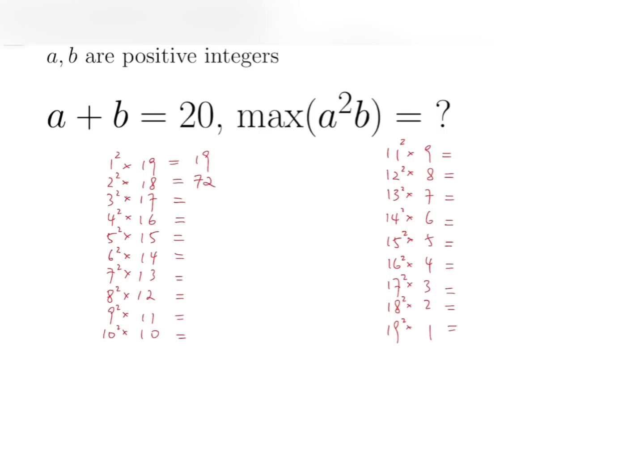3 squared is 9, so the product is 153. Then 4 squared is 256. 5 squared times 15 is 325. 6 squared times 14 is 504. You may notice that the numbers are getting larger and larger. Next, we have the product is 637, 768, 891, and then 1,000.